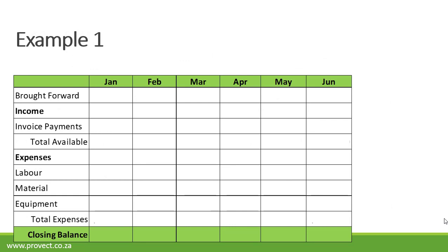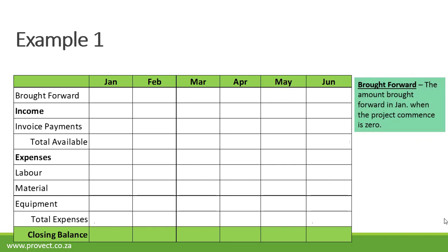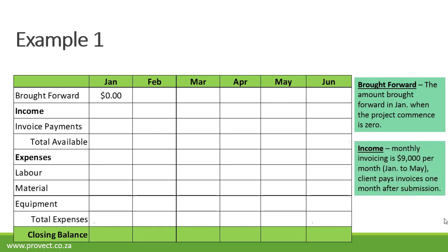This is our typical layout of our project cash flow statement. The amount brought forward in January when the project commences is zero. Our income: we deliver invoices on a monthly basis of $9,000 per month from January to May, and the client pays invoices one month after submission. Therefore, our January invoice will only be paid in February, and our May invoice — the last one — will only be paid in June.